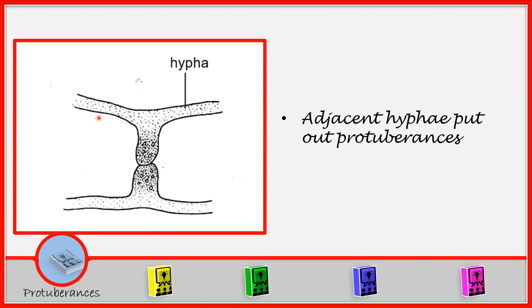We have here two hyphae coming, growing adjacent to each other. The adjacent hyphae put out a protuberance. So this hyphae is growing in that direction and we have another hyphae growing in this direction. So they will put out a protuberance which moves and meet each other.